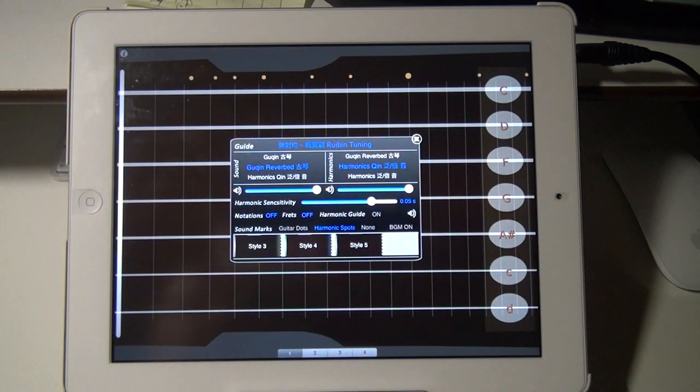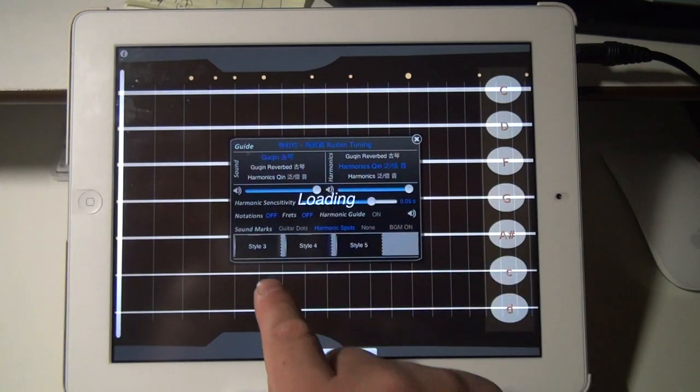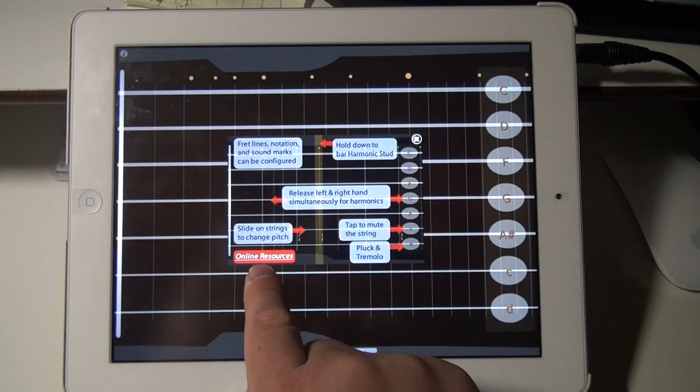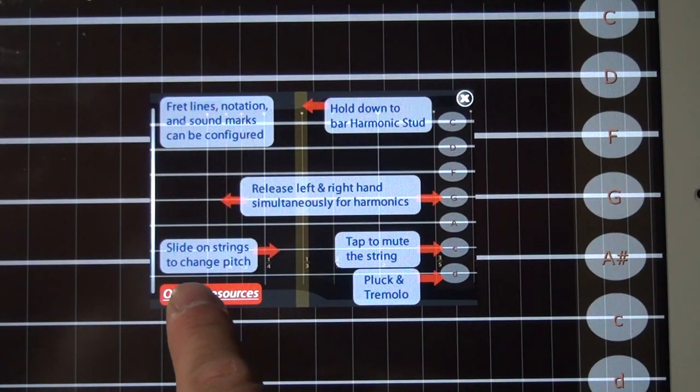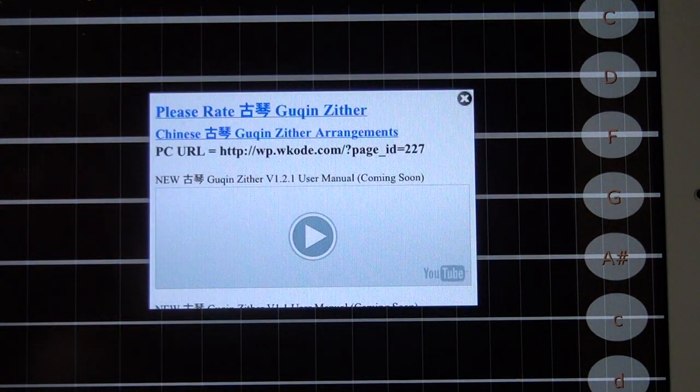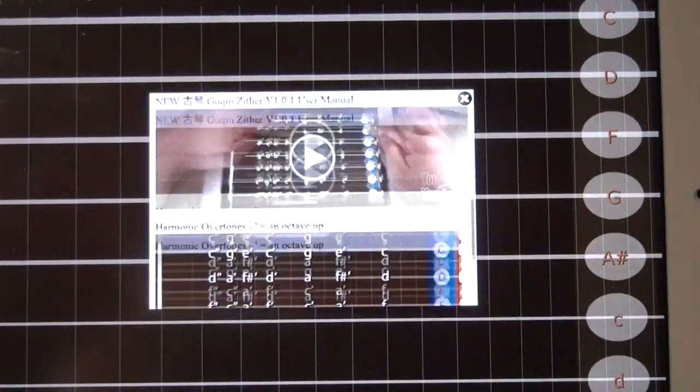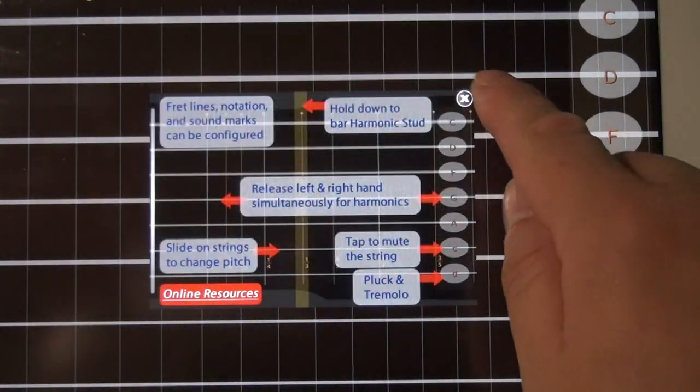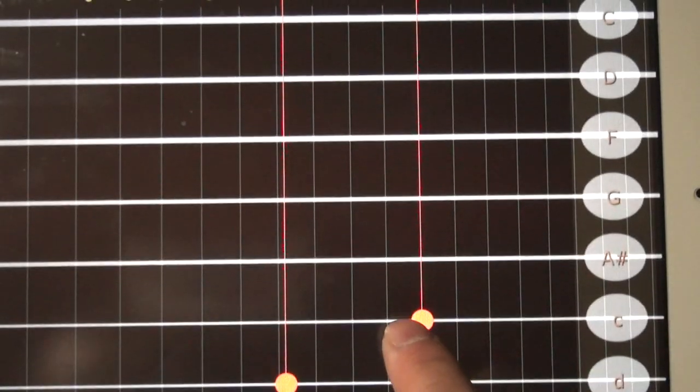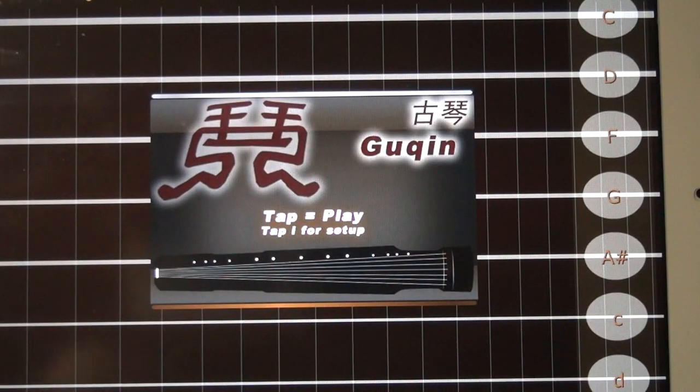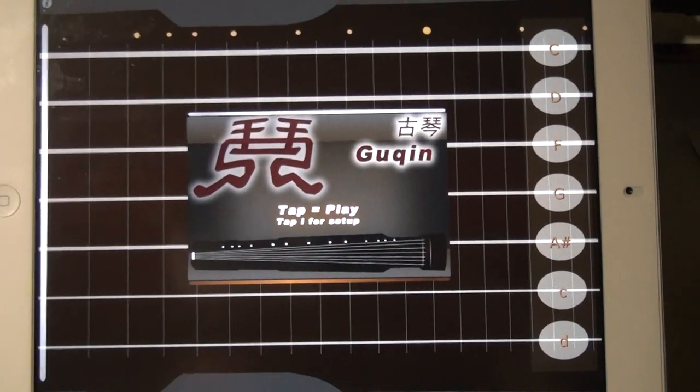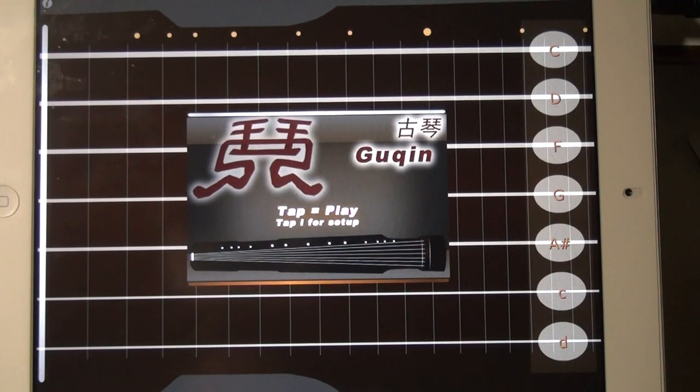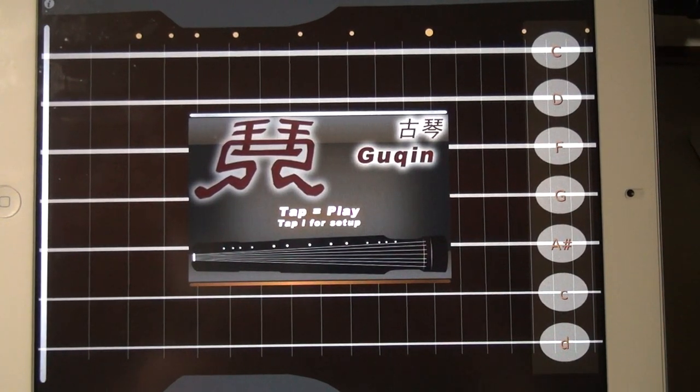Again, if you need more help, tap on guide and go on the website, tap on online resources and you can watch videos here. There you go, this is the Chinese Guqin Zither app for the iPhone, iPod Touch and iPad. Please enjoy it. Please tell your friends and rate the app in iTunes. Thanks a lot. I'll see you next time.